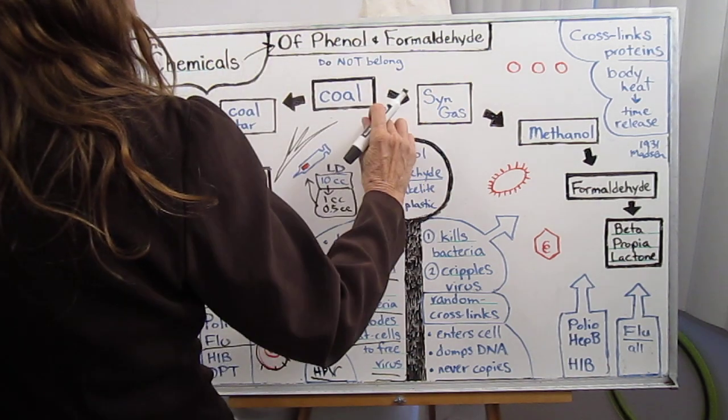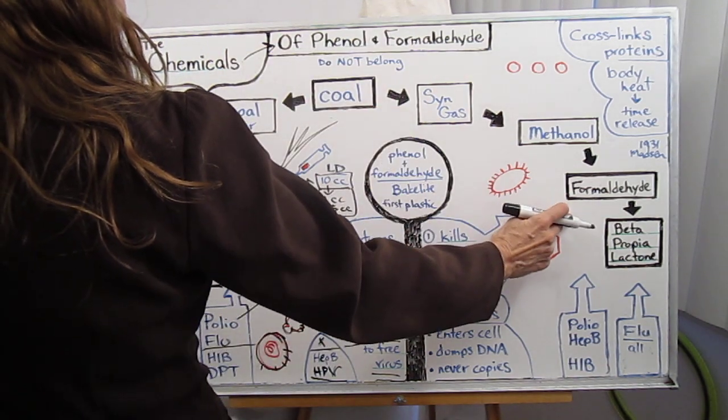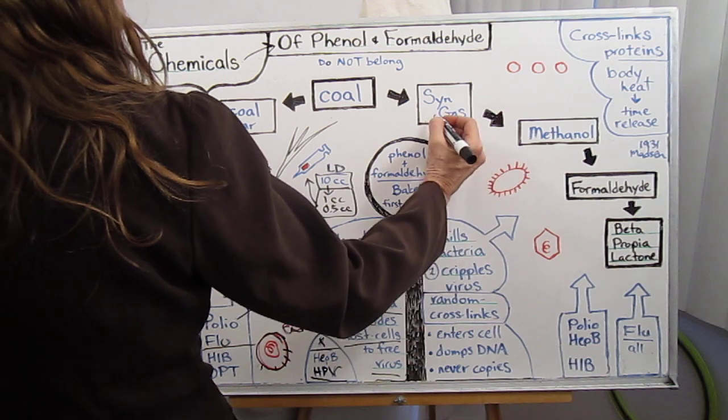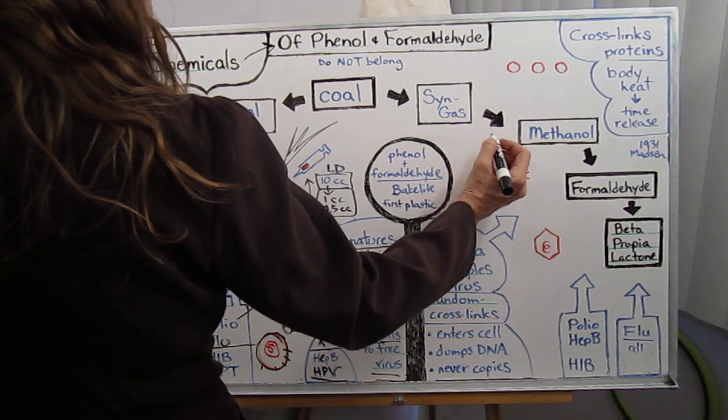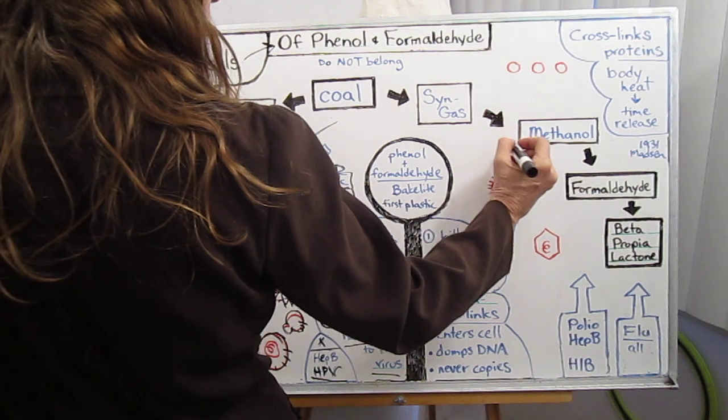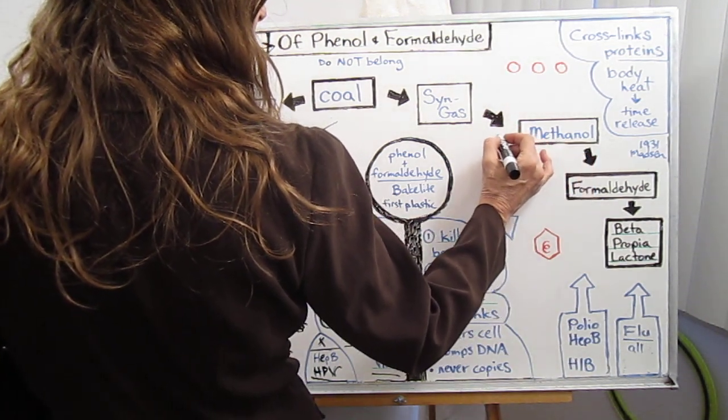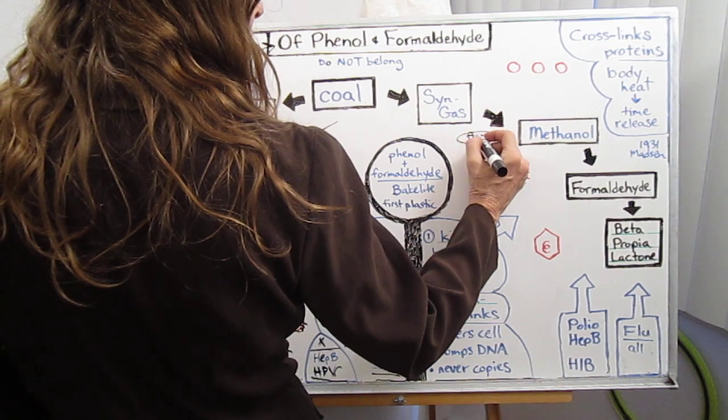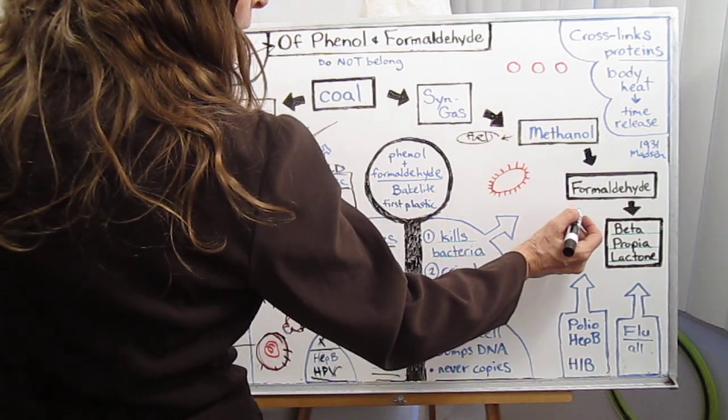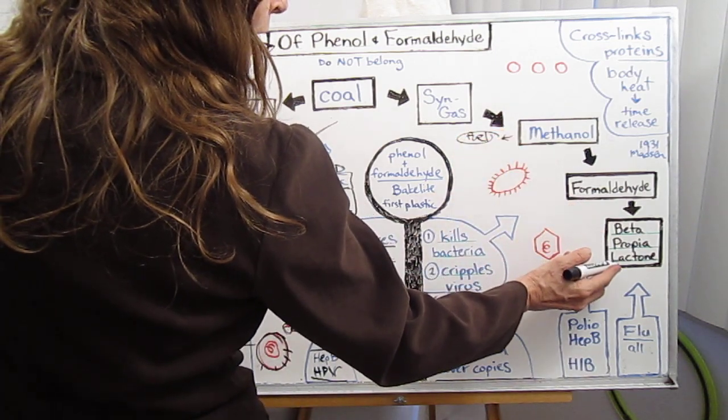So on the other arm of production, they've discovered synthesis gas, syngas for short. And the synthesized gas was turned into methanol, which can become either a fuel or formaldehyde and its derivative beta-propylactone.